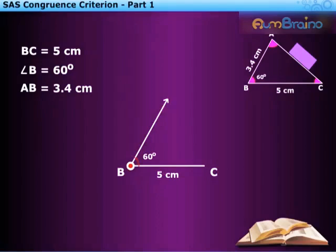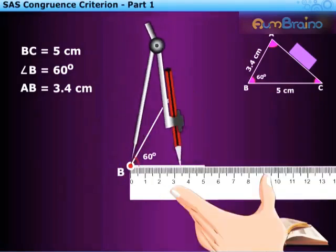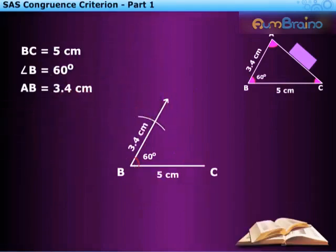To mark this point, with center B and radius 3.4 cm, draw an arc intersecting the ray. The point of intersection is vertex A. By joining AC, we get the exact copy of triangle ABC.